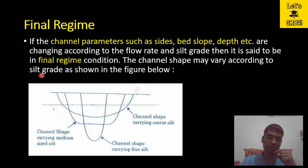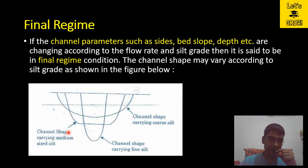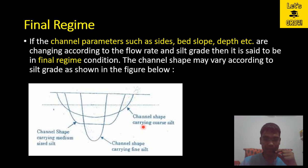The channel shape may vary according to silt grade as shown in the figure. There are basically three channel shapes. The deepest channel is found when the channel is carrying fine silt, where there is large erosion. A medium-sized channel corresponds to medium silt. The shallowest channel, where water depth is least, occurs when the channel is carrying coarse silt.